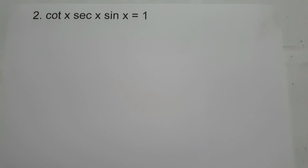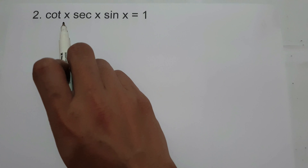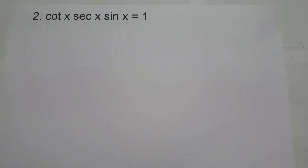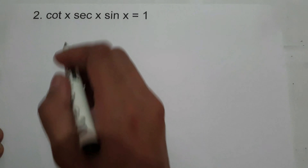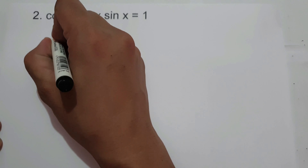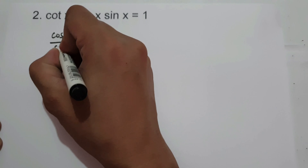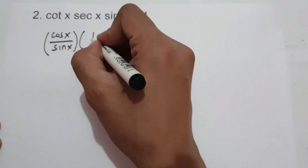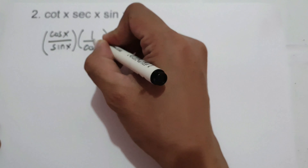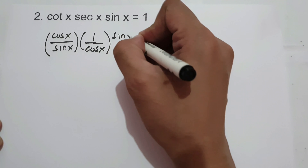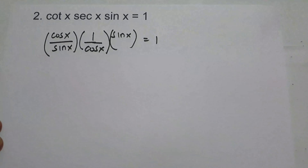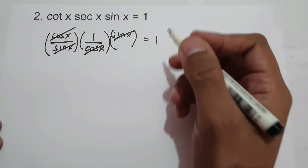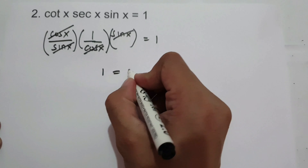On example number 2, we are going to prove cotangent x times secant x multiplied by sin x equals 1. In order for us to prove the given identity, let us change cotangent in terms of sine and cosine, that is cosine x over sin x. And then secant x, that is 1 over cosine x. And let us write sin x equals 1. So to simplify, let us cancel cosine and let us cancel sine.